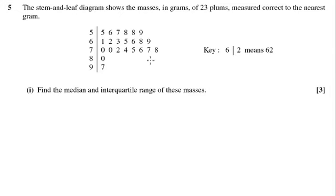Okay, question 5 has given us a stem and leaf diagram and wants us to find the median and the interquartile range. So we have 23 plums. That tells me if I add one on and halve it, that tells me that the median number will be the 12th number. So we want the 12th plum, and these are already in order so we can just count it along.